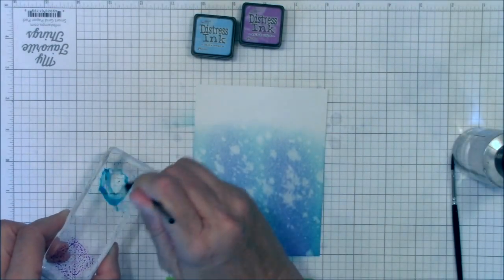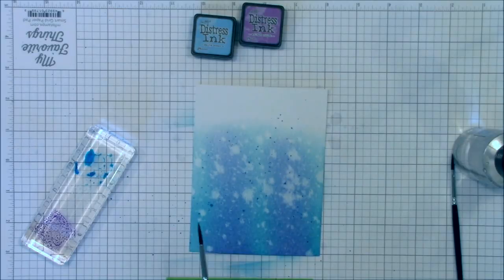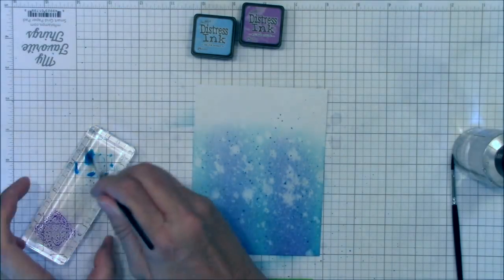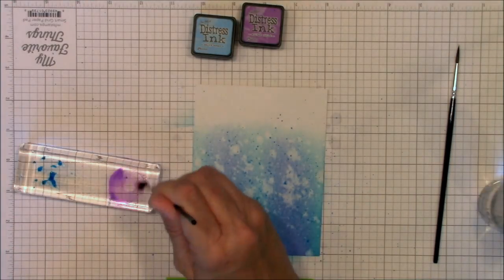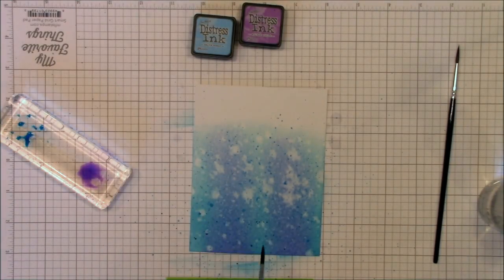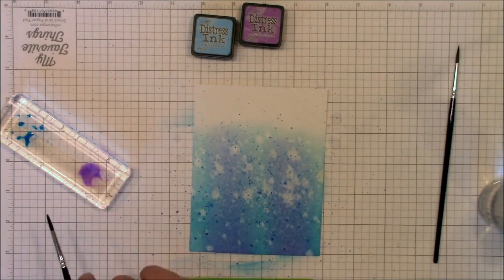I'm using a really thin watercolor brush to add subtle splashes of color, first with the diluted Salty Ocean and then with the Seedless Preserves. Add as much or as little of the splashes as you like. I like lots of splatters.